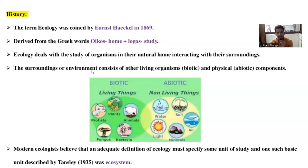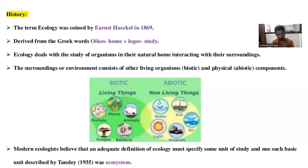In our physical environment, there are two types of components. The first is the biotic component and the other is the abiotic component. Biotic components are those which are living — the living things. Which are the living things? These are plants, animals, and microorganisms. In microorganisms, there are various fungi, microfauna, and flora.